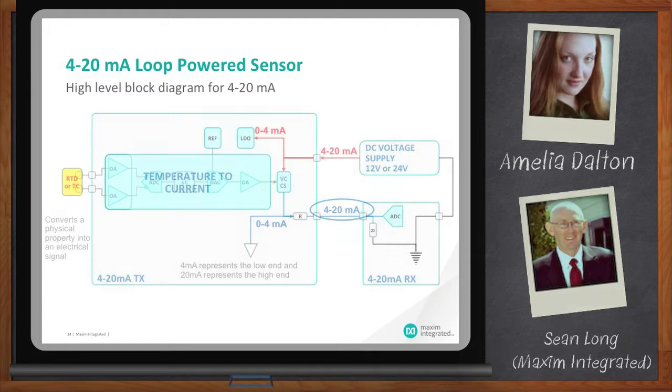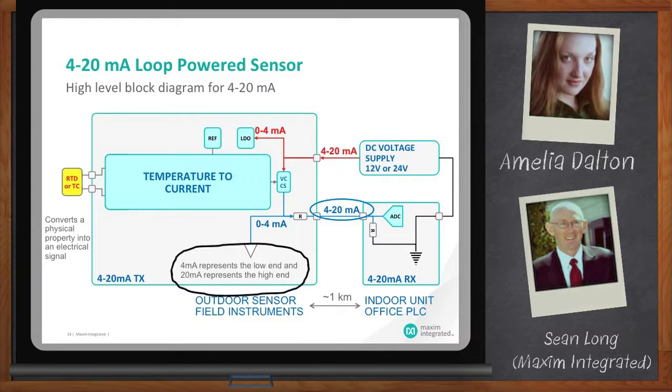Okay. You're going to have a 420 milliamp transmitter card. Now, that's going to take the sensor input, either maybe an RTD or a thermocouple, convert that physical property to the electrical signal and essentially do a temperature to current conversion. Gotcha. Okay. It's going to connect to the 420 milliamp loop. In this case, 4 milliamps would represent the low end. For example, if you're measuring between 200 degrees C and 800 degrees C, 4 milliamps would represent 200. Yeah. And 20 milliamp represents 800.